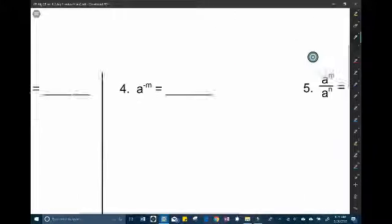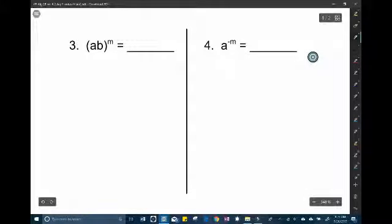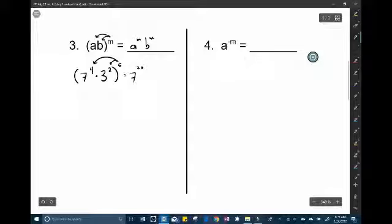Some other properties. So let's move down here. Basically this one here you would distribute the power of a product. So a to the m, b to the m. For example say you had 7 to the 4th times 3 squared all raised to the 5th power. Well in that case you can just distribute the power and when you do that you multiply. So 7 to the 20th times 3 to the 10th. You can't combine these again because they're not the same base.